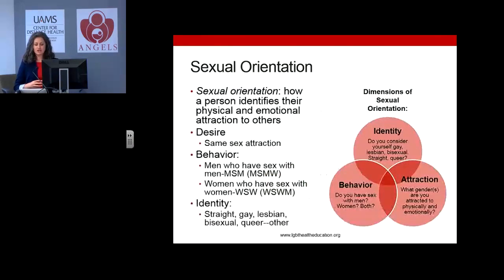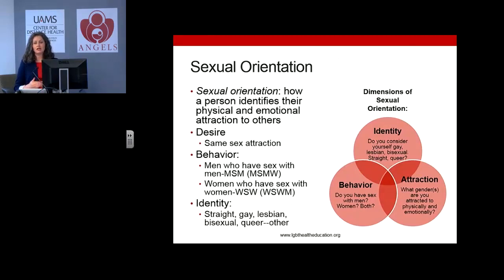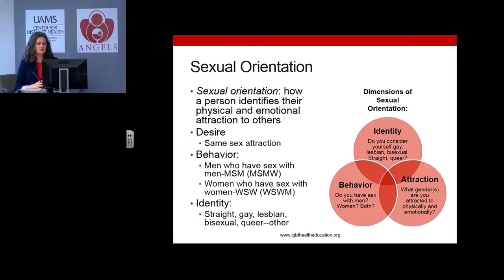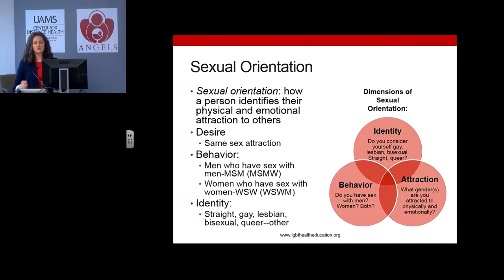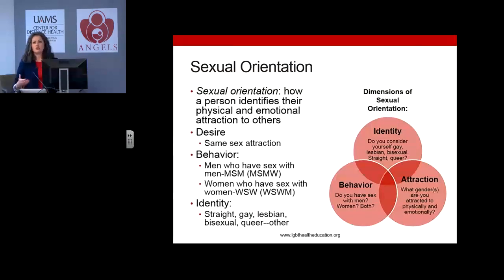Sexual orientation is defined as how a person identifies their physical and emotional attraction to others. It's based on any one or all of the following components: desire, behavior, and identity. If defining based on desire, labels could describe same-sex attraction, opposite-sex attraction, or different-sex attraction. In public health research, we often describe sexual orientation based on behaviors reported by respondents — for example, asking men whether they have sex with other men. That's a behavior-based sexual orientation being ascribed to that group.